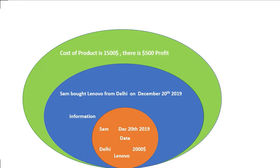Based on this information, combined with our knowledge, we can further find out that the cost of the product is fifteen hundred dollars and there is a profit of five hundred dollars. This comes out of our knowledge, so it becomes business intelligence.